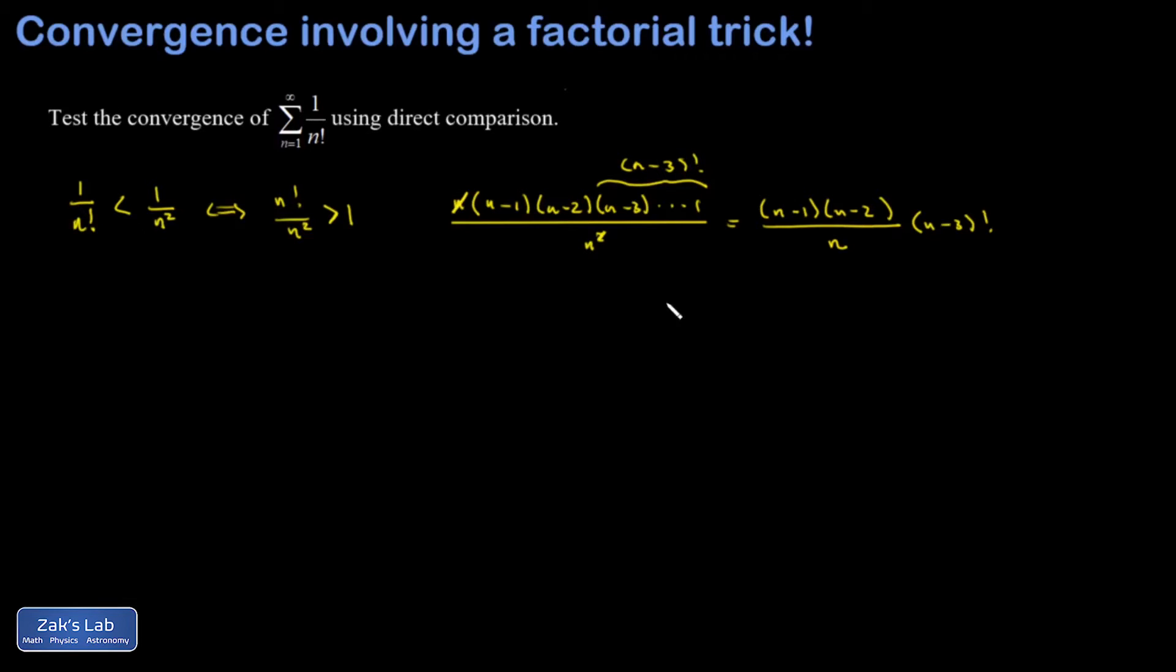Again, our goal here is to show that this whole thing is greater than 1. And if n is bigger than 4, certainly this piece would be bigger than 1. Can I show that that piece has to be bigger than 1?